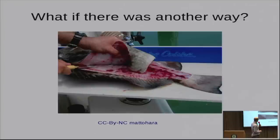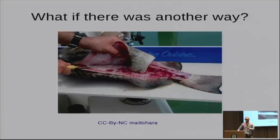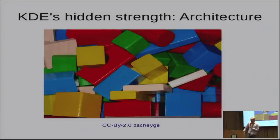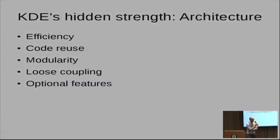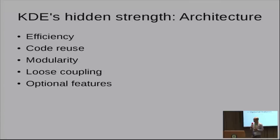What if there was another way? Instead of just filleting the fish and removing things permanently, I'd like to present a way to make KDE lighter in a more structured way. One of the things that KDE has as a real strength — that maybe you don't know about — is that KDE has a really, really strong architecture. If you want to learn how to make a multi-million line software project that works well, you should look at the KDE source code. KDE is based in many ways on a very high degree of efficiency.